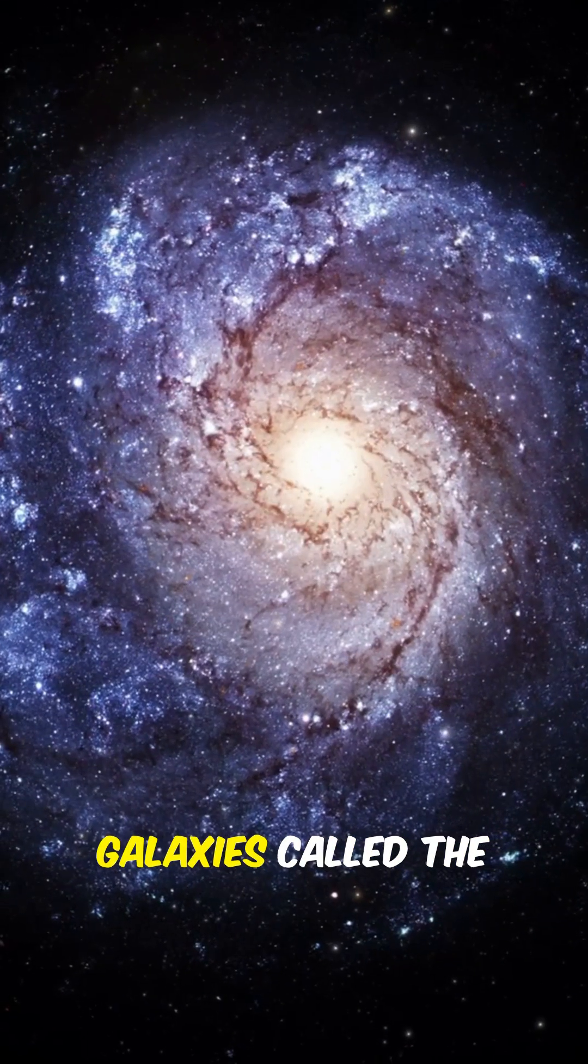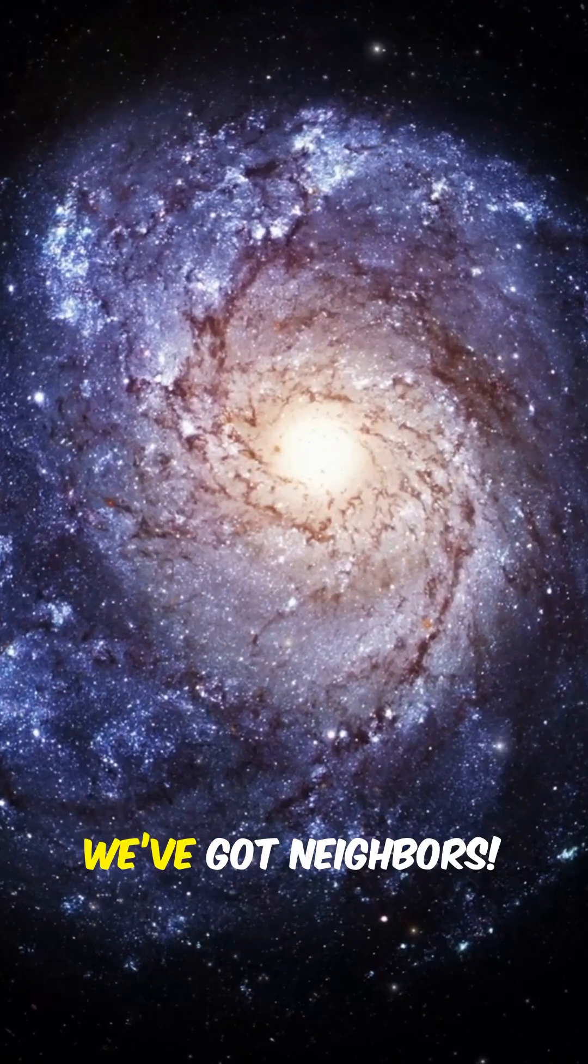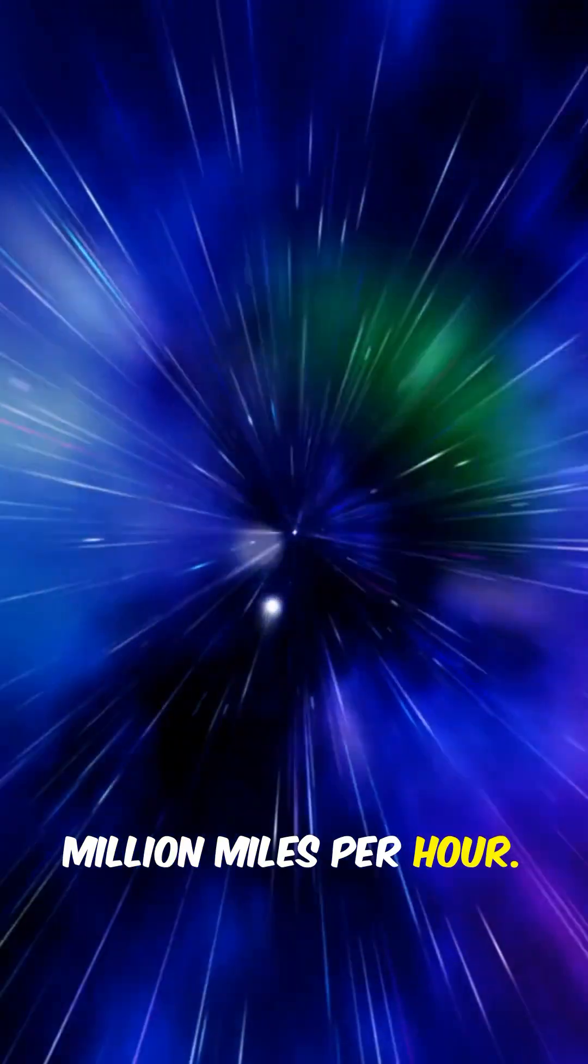The Milky Way is part of a group of galaxies called the Local Group. We've got neighbors. It's moving through space at about 1.3 million miles per hour. Speedy.